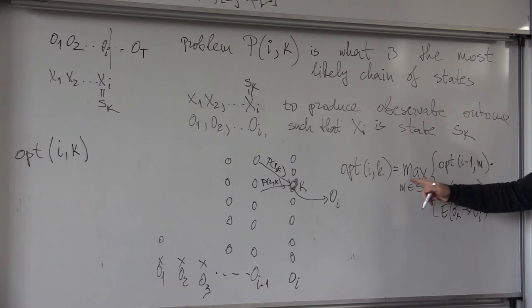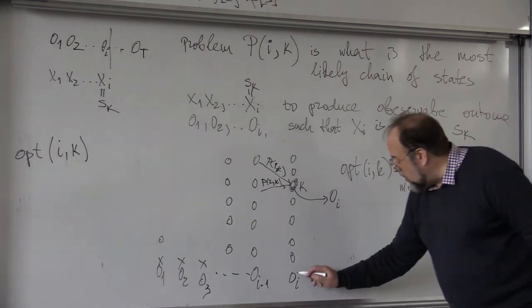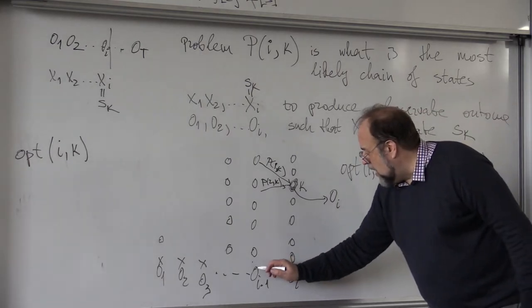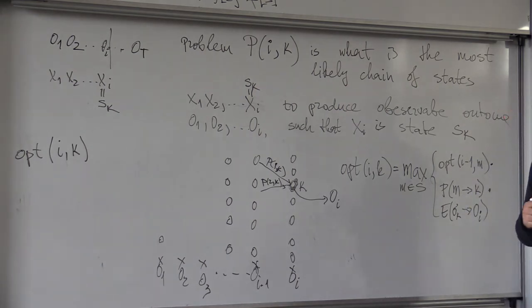Simply, you look, what is the most likely path of length I-1, but then I multiply the end point of that path with probability to go to the state K, and also with emission probability that if I'm in state K, I will produce the corresponding outcome.